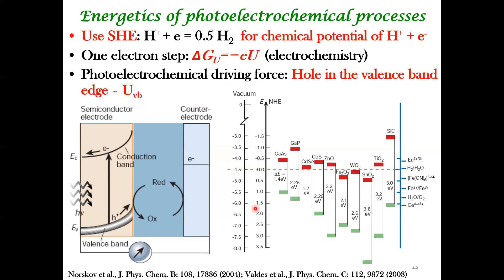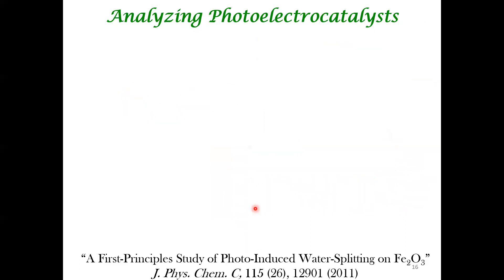Now, for the case study we did on Fe₂O₃: we tried to look at water splitting on Fe₂O₃. This is important because Fe₂O₃ is rust — a very inexpensive material — and it has a band gap of 2.2 eV. If you recall the blackbody spectrum of the sun, semiconductors with a band gap around 2 to 2.2 eV are very advantageous because they can absorb a lot of solar energy.